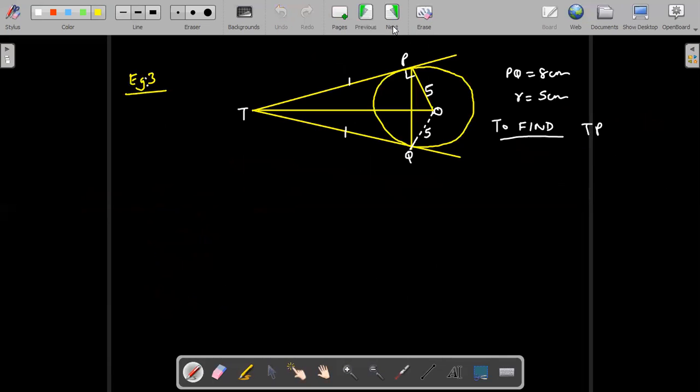Now let me explain to you example number three. This is also a very important question. The question says that there are two tangents TP and TQ. These are the points of contacts and PQ is joined. The length of PQ is given to us as 8 centimeter. The radius of the circle is 5. So OP and OQ if I join is going to be 5. Question is find out the length of TP.